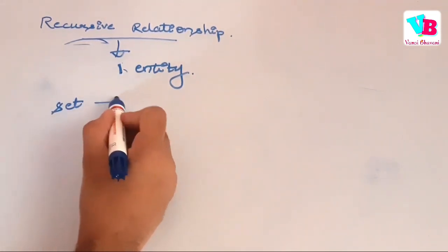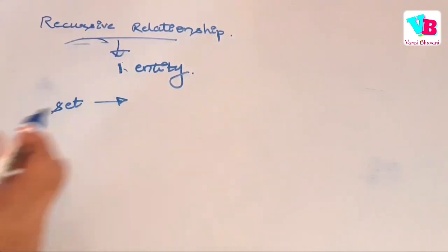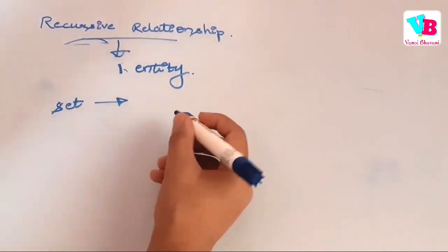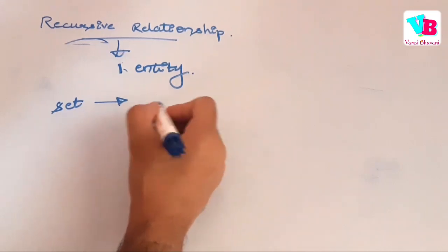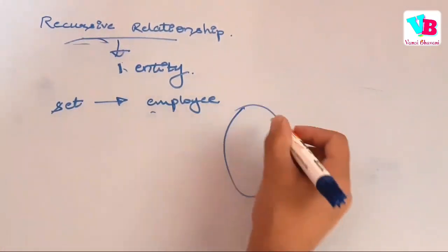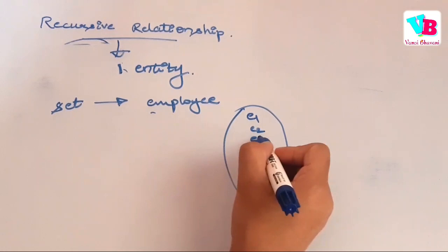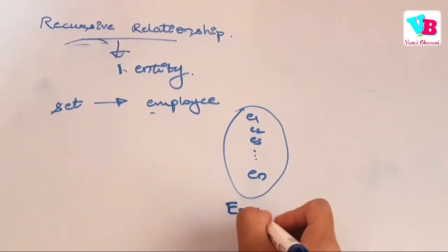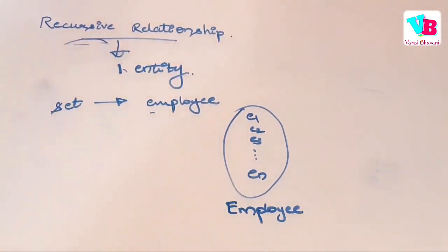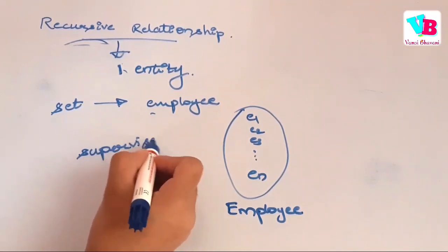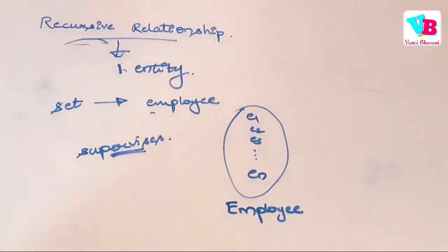In the ER model, we have entities and entity sets. Let's say this is the set of the Employee entity. So E1 is an employee, E2 is an employee, E3 is an employee, and so on. Now let's say the relationship is 'supervises' — meaning one supervisor supervises their own subordinates.